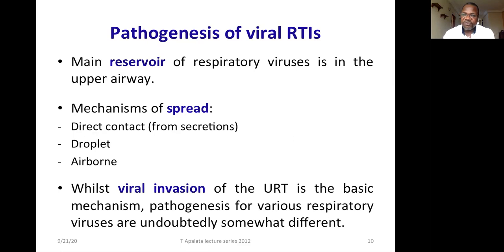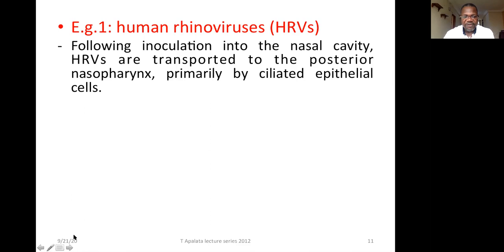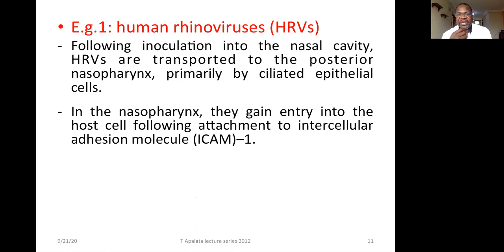For example, rhinoviruses that cause common cold — following inoculation into the nasal cavity, human rhinoviruses are transported into the posterior nasopharynx by ciliated epithelial cells. If you are a smoker, your ciliated epithelial cells might have been damaged, making it difficult to clear those viruses. Ciliated epithelial cells play a role in trying to clear those viruses and bacteria.